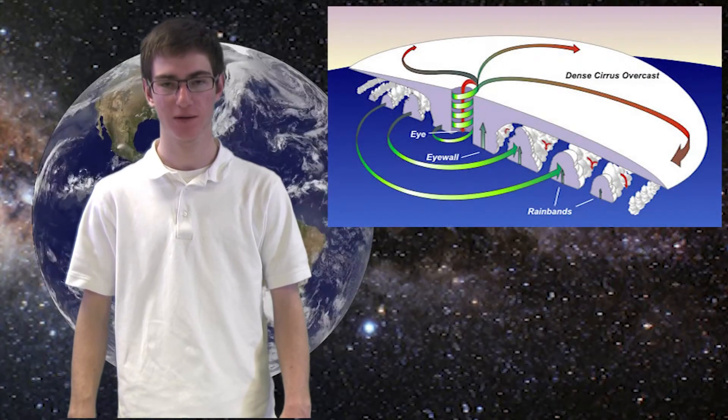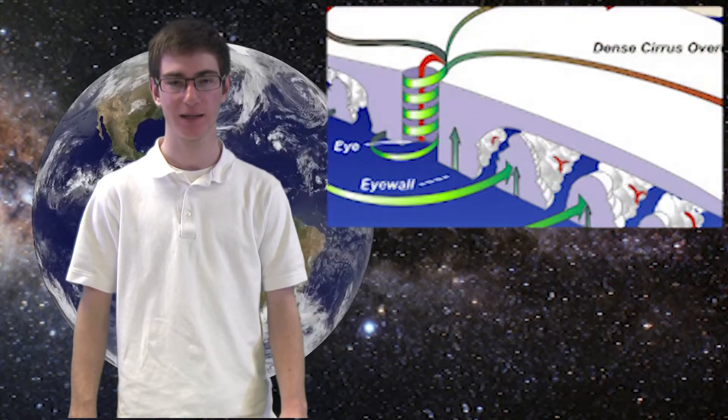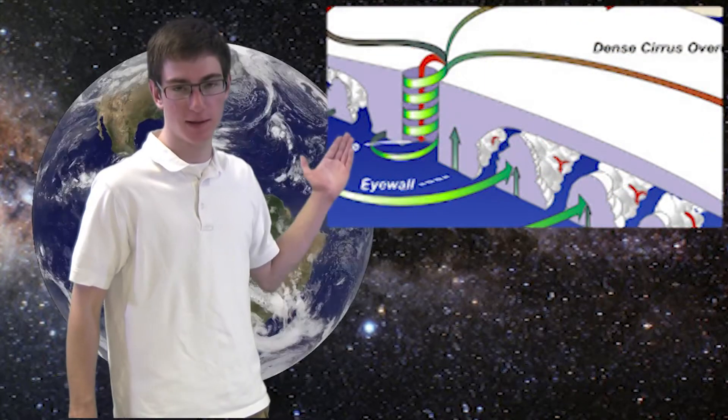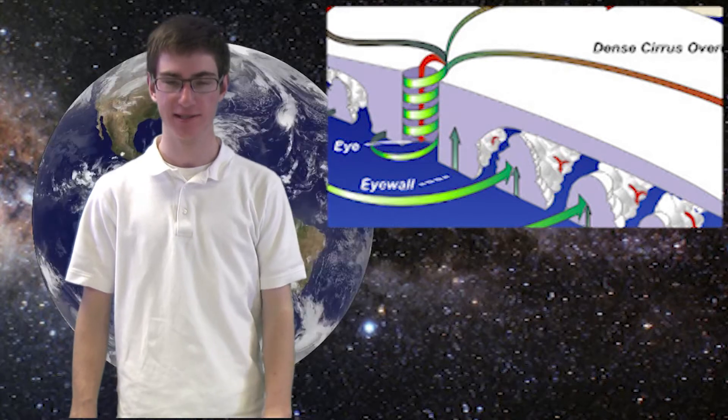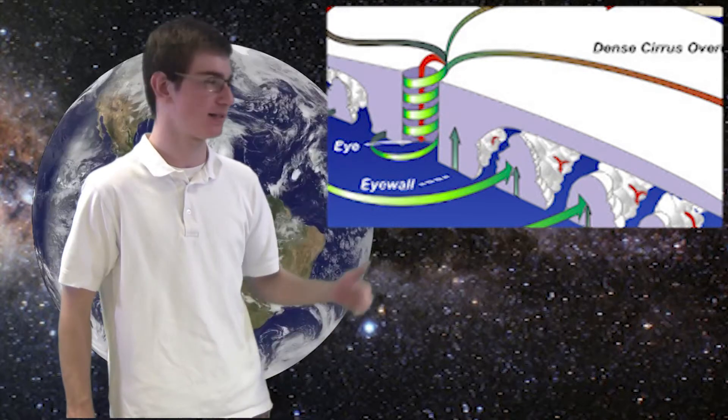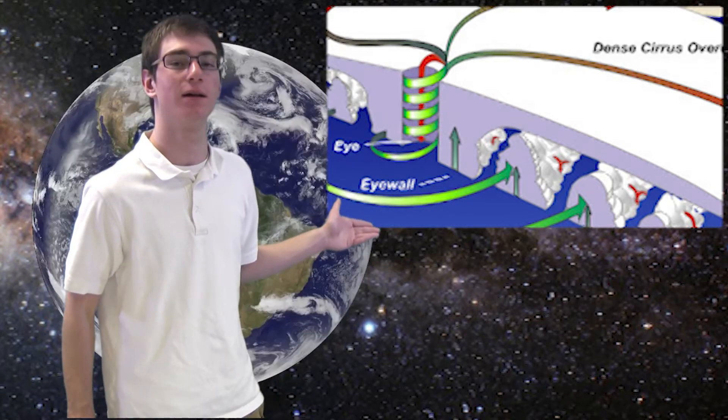The most dangerous part of the hurricane would be the eye wall. The eye wall is located just outside the eye, which is in the center right around here. The eye wall carries really intense winds, which will do the most damage, which is where you get your wind damage from.